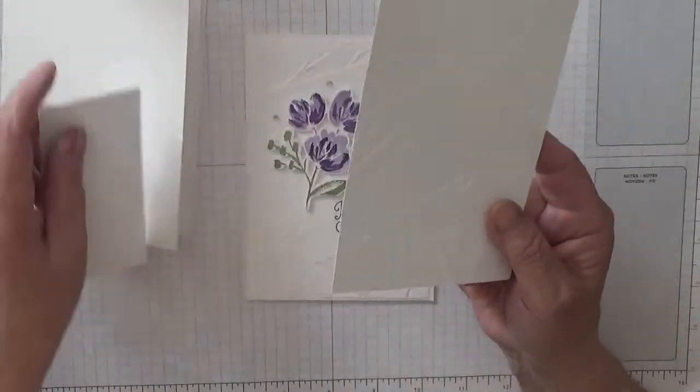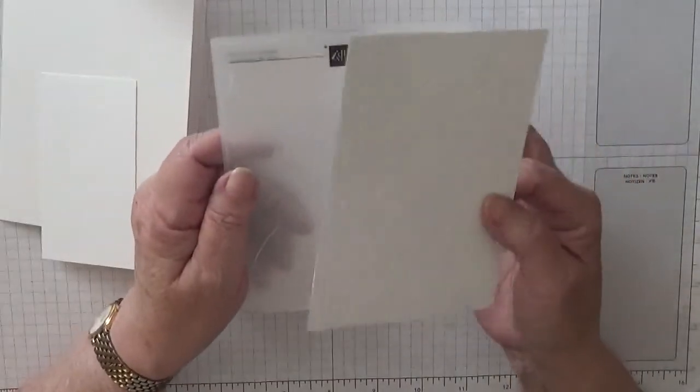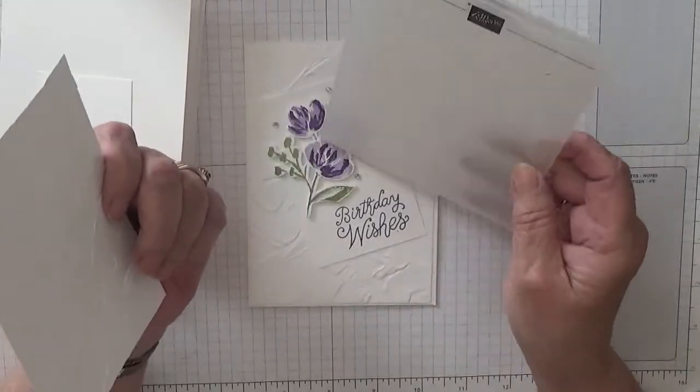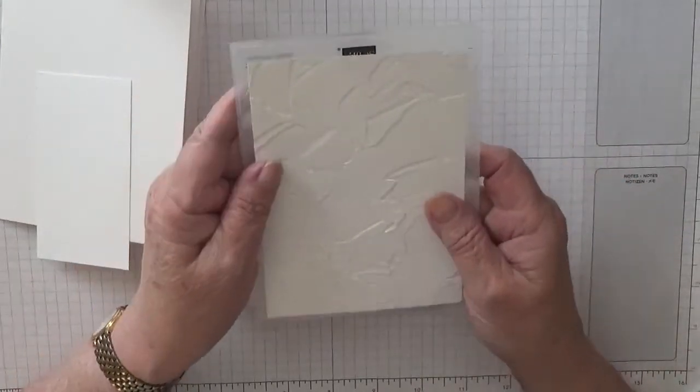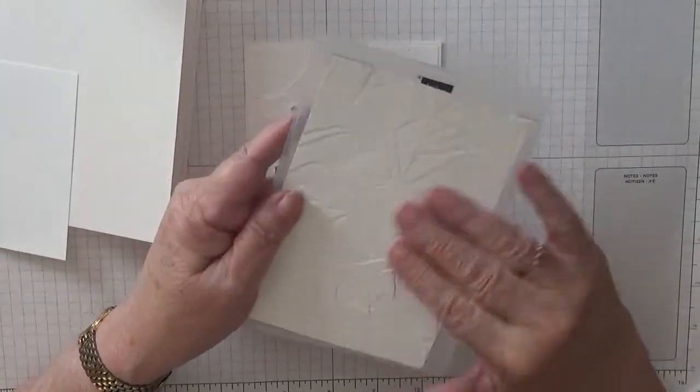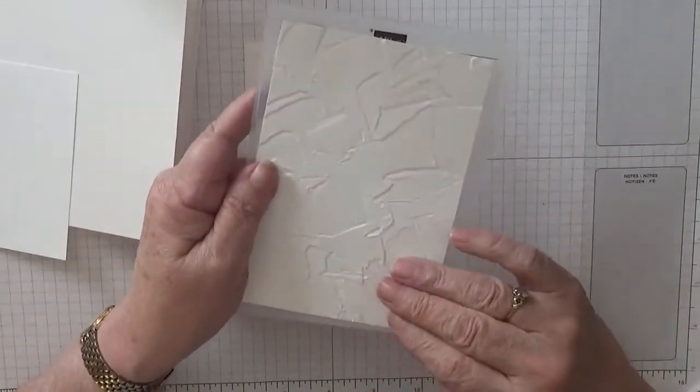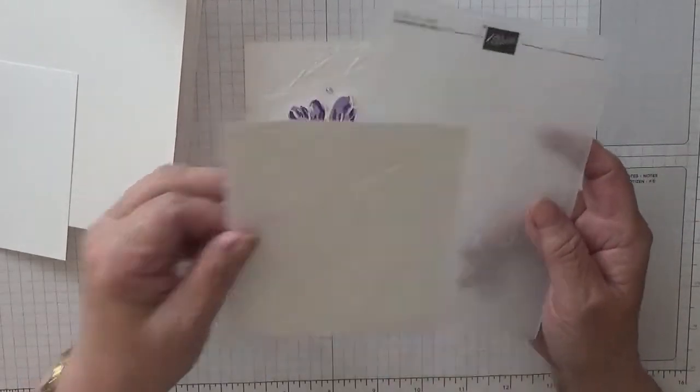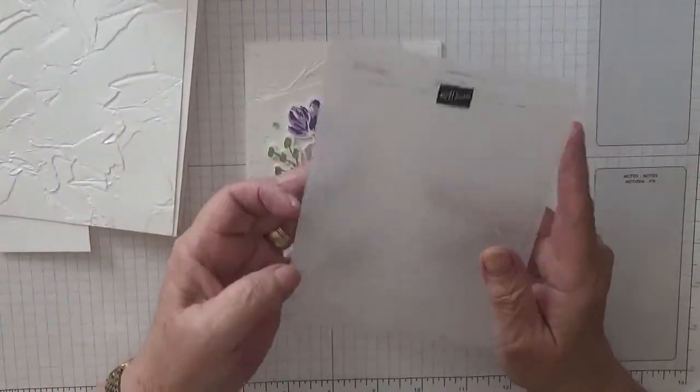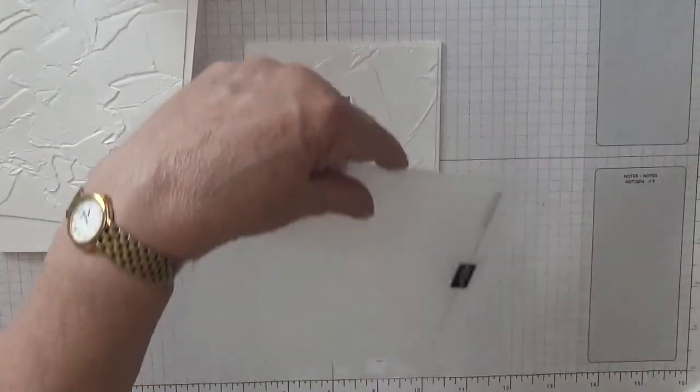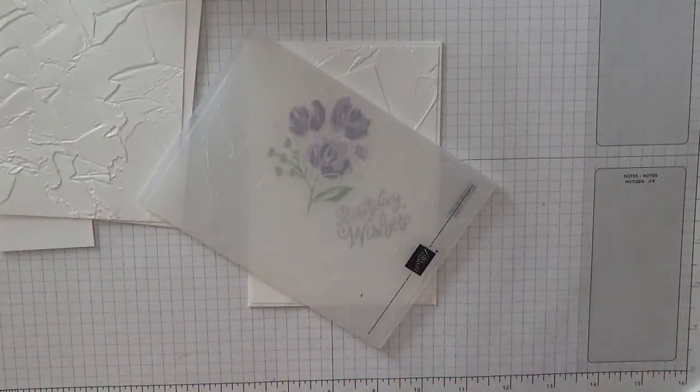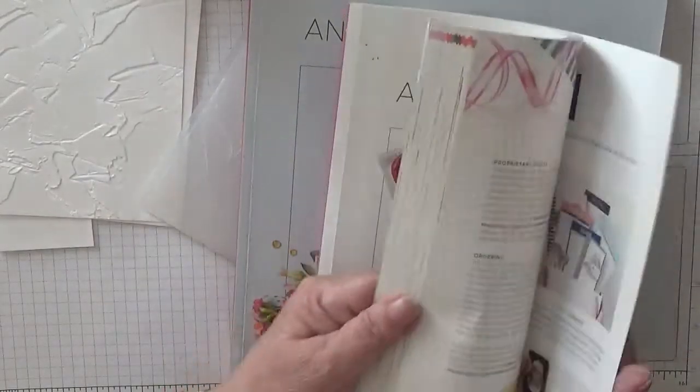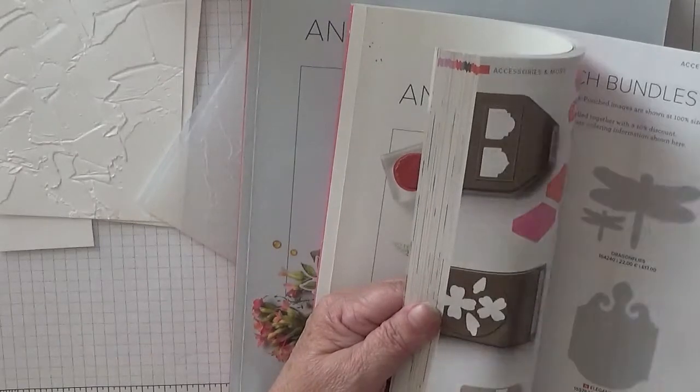And this I've already embossed in the embossing folder that actually goes with this flowers, artful something or other. So I've embossed that. It looks like plastic on your walls before you smooth that out, that's what it reminds me of. So that's to go on top. Let me see if I can find the name of this.